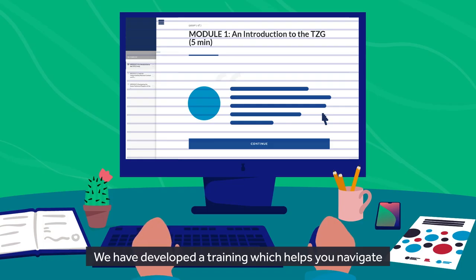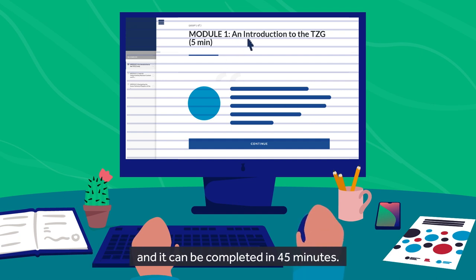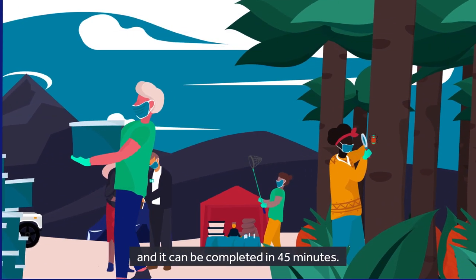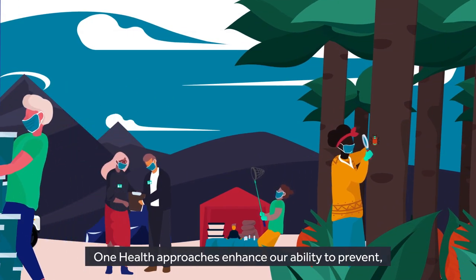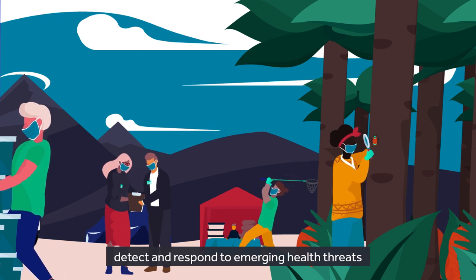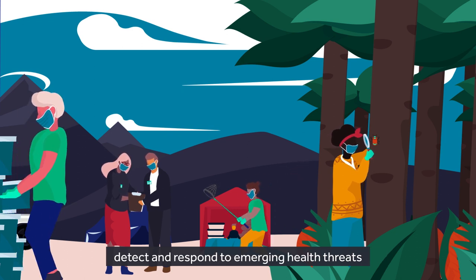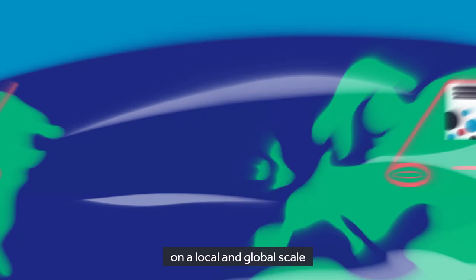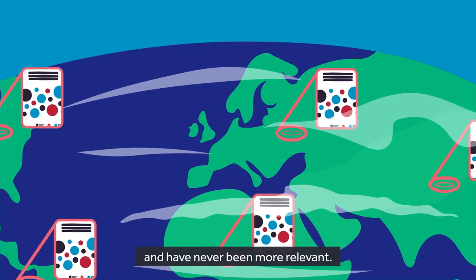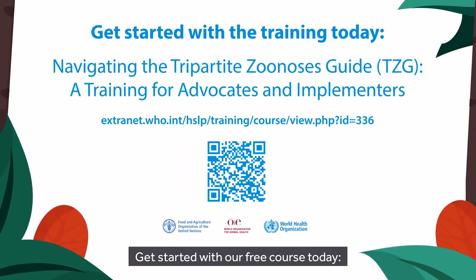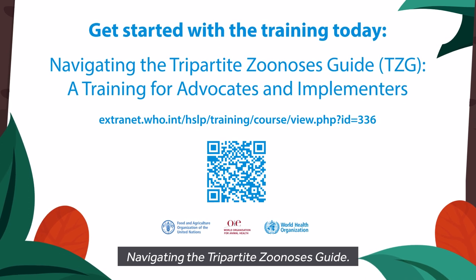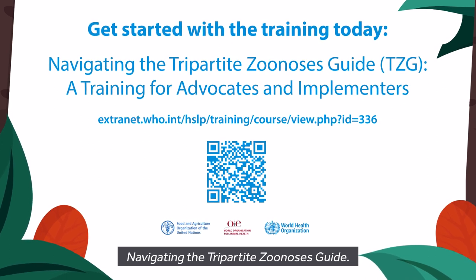We have developed a training which helps you navigate and make the most of the guide, and it can be completed in 45 minutes. One Health approaches enhance our ability to prevent, detect and respond to emerging health threats on a local and global scale and have never been more relevant. Get started with our free course today: Navigating the Tripartite Zoonosis Guide, a training for advocates and implementers.